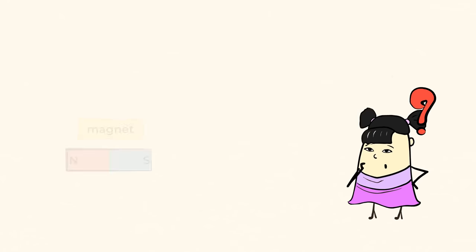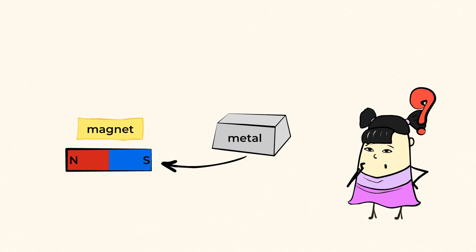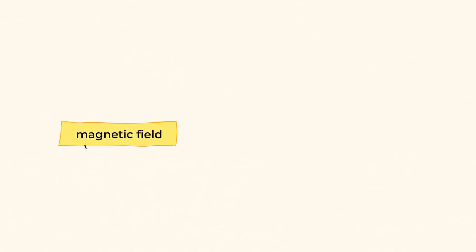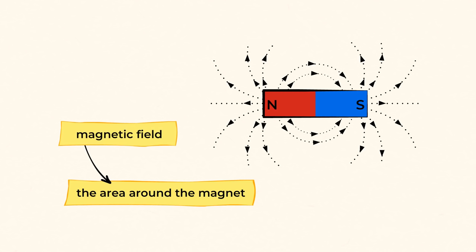You're probably curious what a magnet is and where the whole magic of it comes from. Magnets are made of metals that have been exposed to a very strong magnetic field. A magnetic field is the area around the magnet.